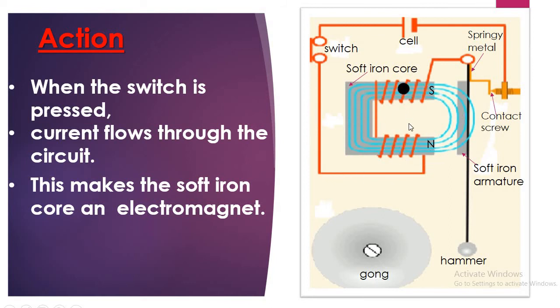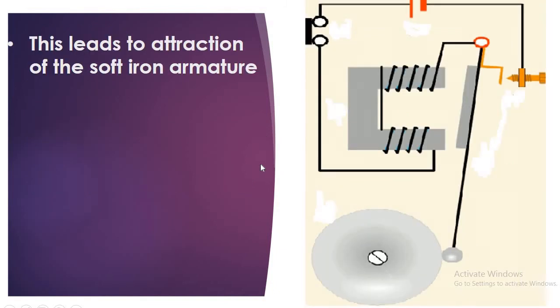Now, the magnet is having an attractive power. Therefore, this soft iron armature will get attracted to the magnet. Let's see. During the attraction of the soft iron armature, we see the hammer hitting the gong.